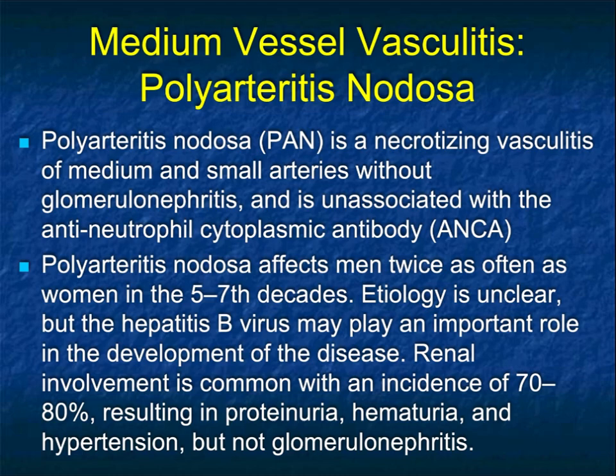PAN is a necrotizing vasculitis of medium and small arteries without glomerulonephritis, and it's unassociated with ANCA. It affects men twice as often as women, in the fifth to seventh decade, so a little bit older than some of the other processes. Its etiology is unclear, but the hep B virus may play an important role. Renal involvement is very common — vasculitis that involves the kidney.